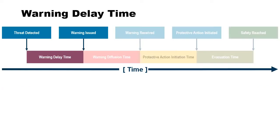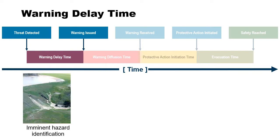We model each of these components in LifeSIM explicitly. Warning delay time is modeled with three parameters. First, imminent hazard identification time — as discussed with Teton, when was it identified that the dam was going to breach and communication needed to go to emergency managers? That's the imminent hazard identification time: the point that somebody realizes it's too late and people need to evacuate.